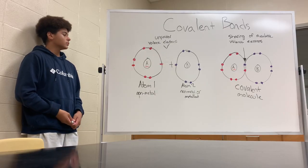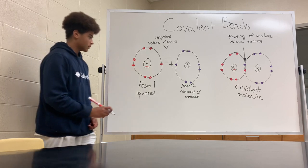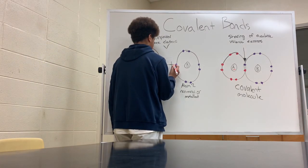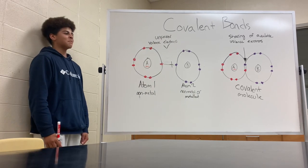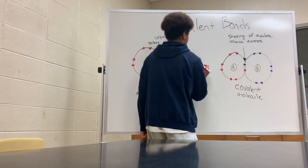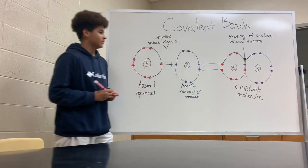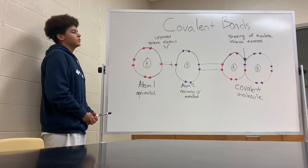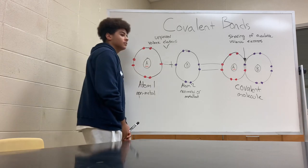Covalent bonds. When pairs of electrons are shared by two atoms, it creates a covalent bond. Covalent bonds always occur between a metal and a non-metal. Covalent bonds help create a full valence electron shell by sharing electrons.